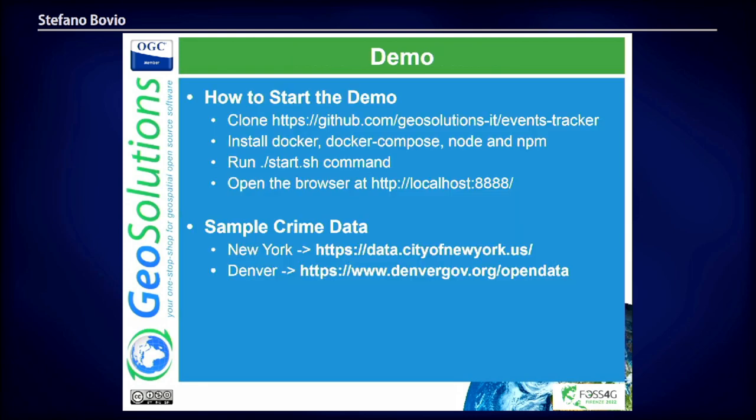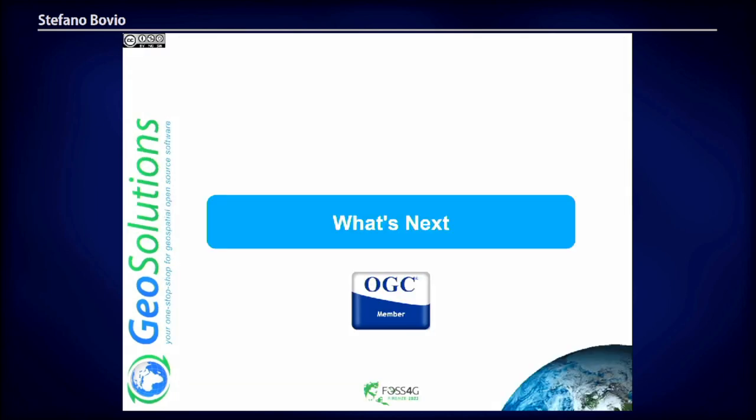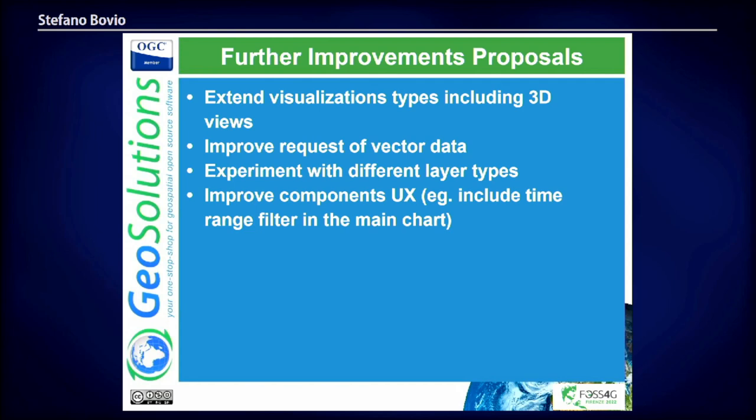If you want to try this demo, you can download the events tracker repository — there is documentation there, along with sample data from the New York Open Data Portal and the Denver Open Data Portal. Some improvements we want to propose for the next iteration include extending to 3D views and generally improving client performance.